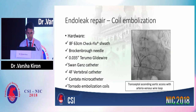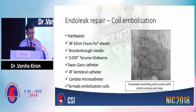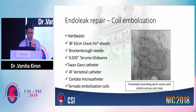With constant traction at both ends, through this Checkflo sheath a 4F vertebral catheter was tracked into the mouth of the aneurysm sac. Through that, we put a Cantata microcatheter, which enabled us to serially deploy multiple coils. One important thing to remember is to always advance the Swan-Ganz catheter first before advancing the wire and exerting traction, because that may cause significant damage to the tissue, especially the mitral valve.